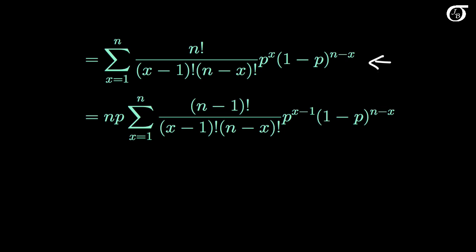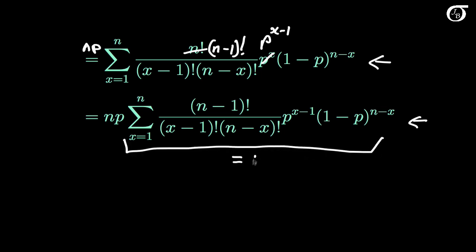Now we're at an advantage because we know the final answer is going to be n times p. So it might help if we take np outside of the sum and then try to show that the remaining sum is equal to 1. I'm going to change n factorial to n times (n-1) factorial, and take the n outside of the summation because it doesn't involve x. Similarly I'm going to take a p outside, so we have np times this sum, and p raised to x becomes p raised to (x-1). Now we need to see if this sum is equal to 1 — if so, the mean is equal to n times p.